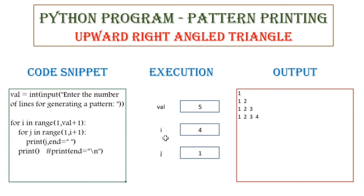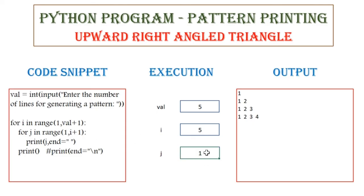Now the value of i is going to be 5, and the value of j is going to be from 1 to 5. So now it is going to start at 1, and I am going to print the value of j. And this keeps going on till the output gets printed like this.